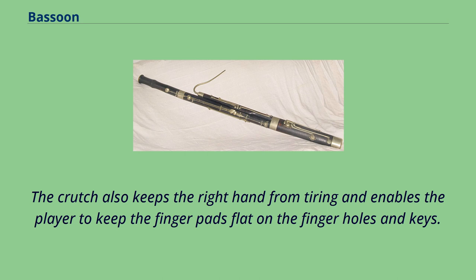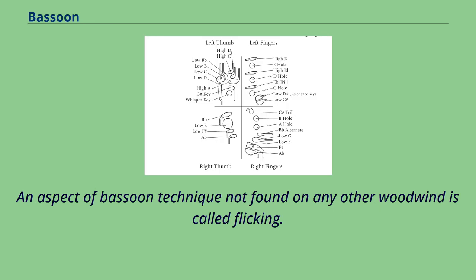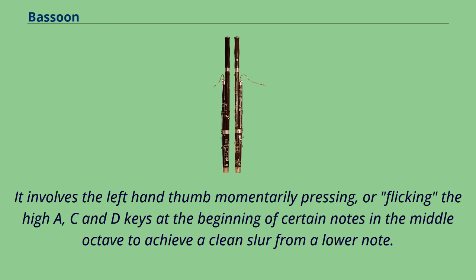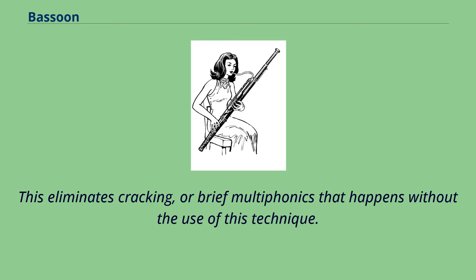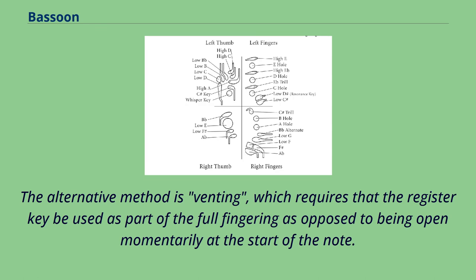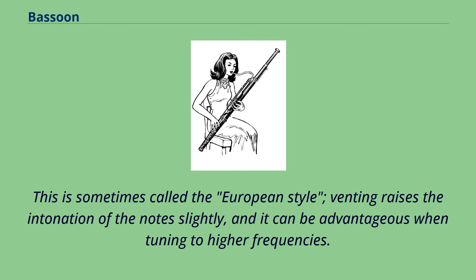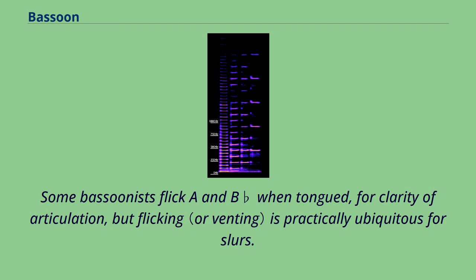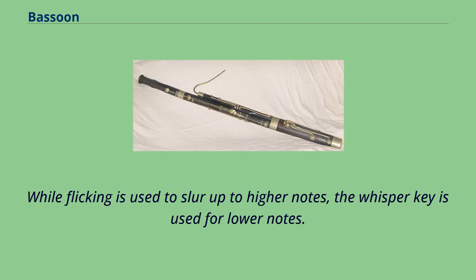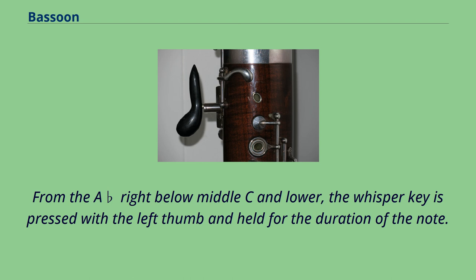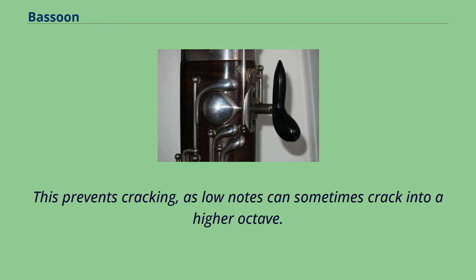An aspect of bassoon technique not found on any other woodwind is called flicking. It involves the left hand thumb momentarily pressing, or flicking, the high A, C and D keys at the beginning of certain notes in the middle octave to achieve a clean slur from a lower note. This eliminates cracking, or brief multiphonics that happen without the use of this technique. The alternative method is venting, which requires that the register key be used as part of the full fingering as opposed to being open momentarily at the start of the note; venting raises the intonation of the notes slightly. While flicking is used to slur up to higher notes, the whisper key is used for lower notes — pressed with the left thumb and held for the duration of the note from A-flat below middle C and lower — preventing cracking as low notes can sometimes crack into a higher octave.